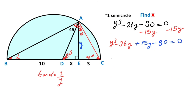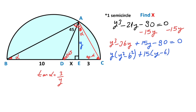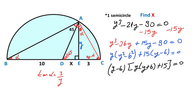If you group these terms: y times (y² − 36) minus 15 times (y − 6) equals 0. This time, factoring out (y − 6): (y − 6) times [y(y + 6) + 15] equals 0. So (y − 6)(y² + 6y + 15) equals 0.